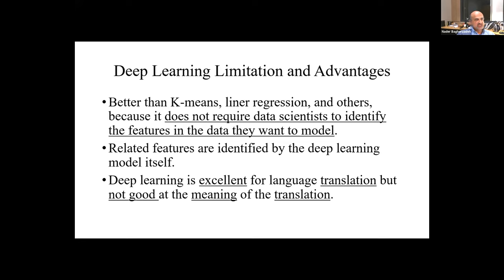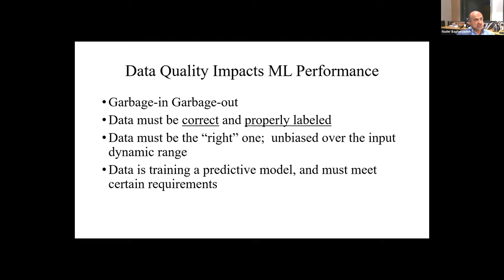Deep learning is much more efficient than other techniques because we don't have to program it. We basically train it, let it loose, and it will try to infer and figure out what's going on. Some things deep learning is very good at: translation — you probably use it regularly if you call a call center and it detects what you're saying. But deep learning is not good at finding the meaning of a translation. Because it's based on training, you have the problem of garbage in, garbage out. If the input you give the system for training is not good, not relevant, not properly labeled, then you get garbage out.